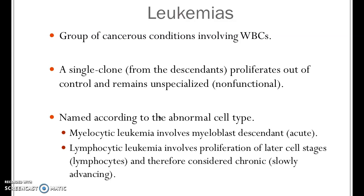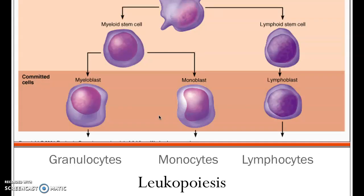There are four different categories that leukemias can fall under. Two broad categories: myelocytic leukemia, which involves the myeloblast lineage, and lymphocytic leukemia. To understand this better, we look at leukopoiesis — the formation of leukocytes, or white blood cells. It starts with a stem cell in the red bone marrow called a hemocytoblast, which divides into either a myeloid stem cell or a lymphoid stem cell. Myeloid stem cells produce red blood cells, certain white blood cells, and platelets; lymphoid stem cells produce T and B lymphocytes.